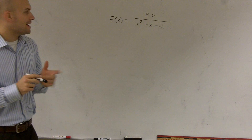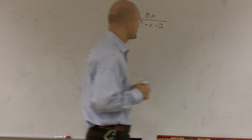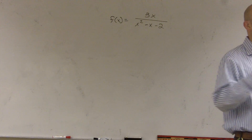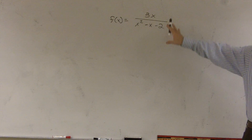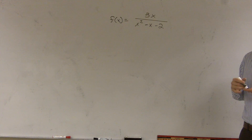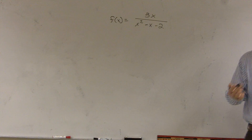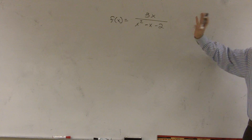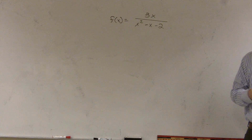So the first thing we want to do is graph the function f(x) equals 3x over x squared minus x minus 2. Whenever we see a rational function, we know there's going to be at least a vertical asymptote. So the first thing I want to do is find the vertical asymptote.